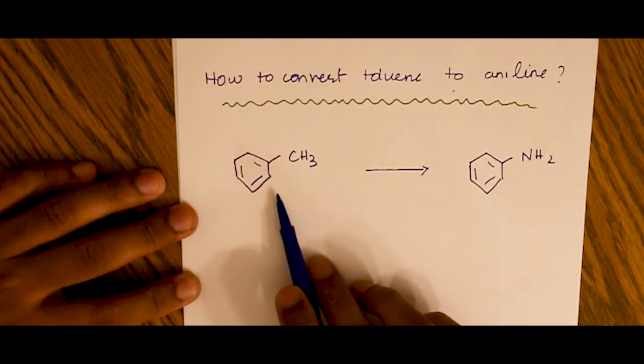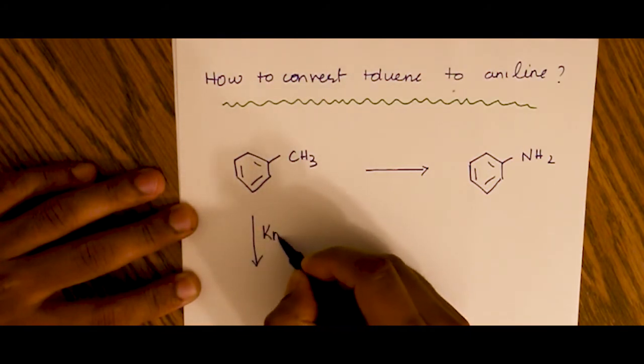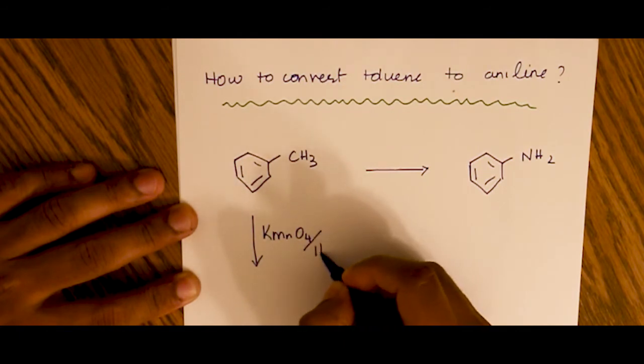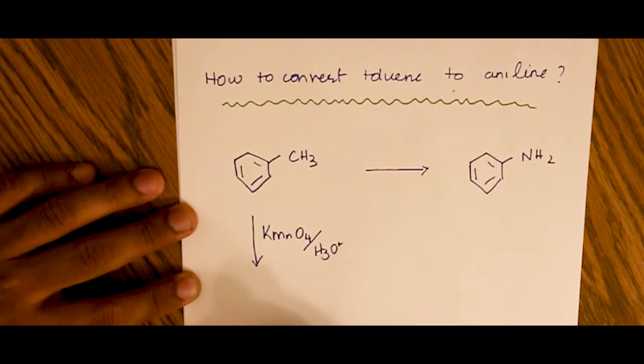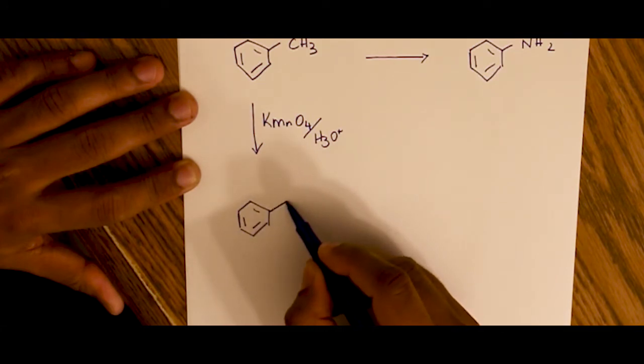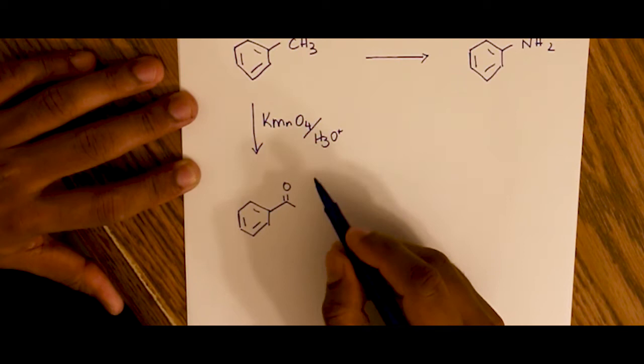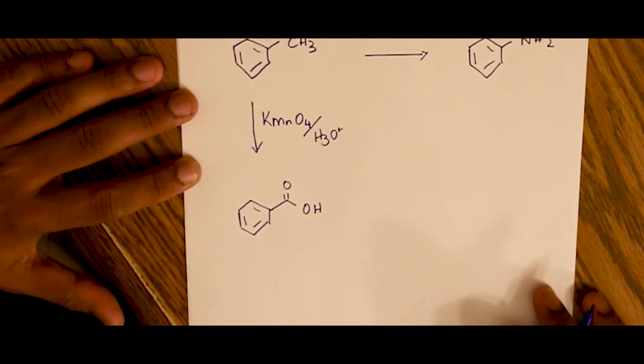we oxidize toluene using KMnO4 and H3O+, which gives us benzoic acid. So toluene gets converted into benzoic acid in the presence of potassium permanganate and H3O+. That's the first step.